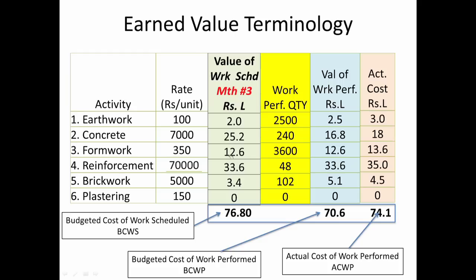Looking at the work package level, we can do a comparison and see which packages are affecting performance. At earthwork, we had scheduled only 2 but performed 2.5 — earthwork is doing better than planned. In concreting, 25.2 was scheduled but we are only at 16.8 — way behind schedule as far as concreting goes.